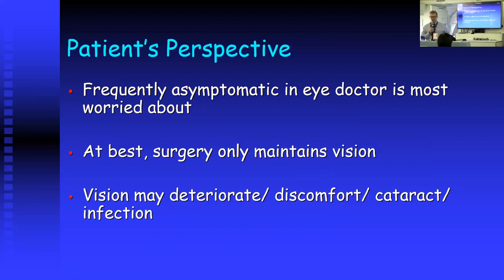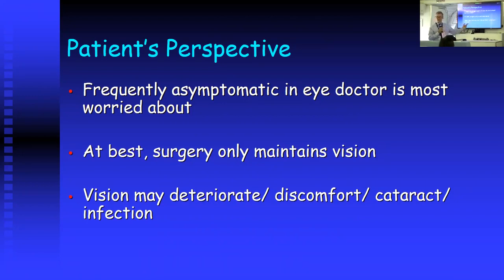From the patient's perspective, the problem with glaucoma is that the patient is asymptomatic, then you offer them eye drops which cause red, uncomfortable, itchy eyes. If medical treatment fails, you offer them surgery which carries the risk of operating on an eye that already sees quite well. With this surgery we're only aiming to maintain vision — it's not aimed at improving vision, it's there to stop deterioration. Vision may deteriorate, it may become uncomfortable, a cataract may develop, and there's a risk of infection.